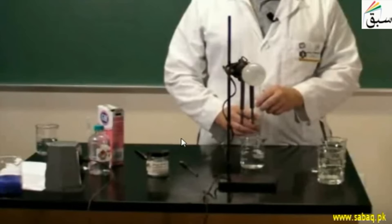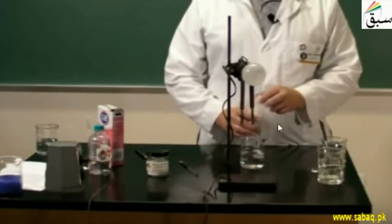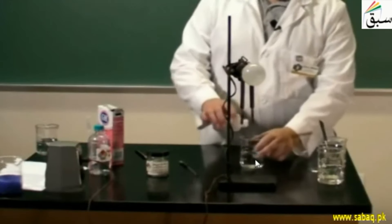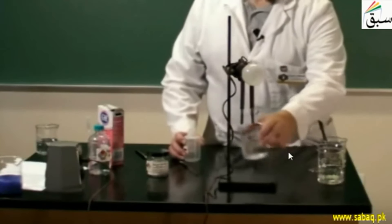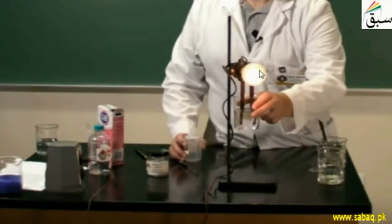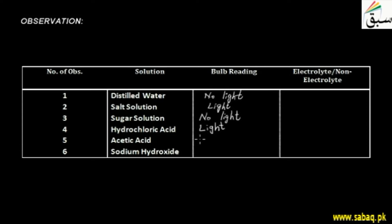Now we move to acetic acid, which is a weak acid. We have added acetic acid to distilled water. The bulb gives a dim light — dim light is also light, but it is less bright. So we will note the observation: dim light.